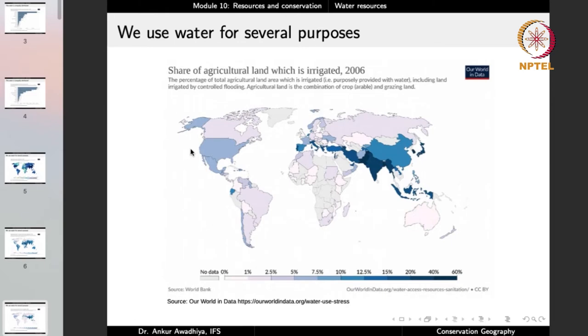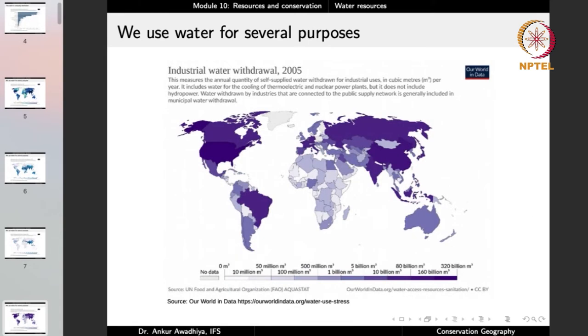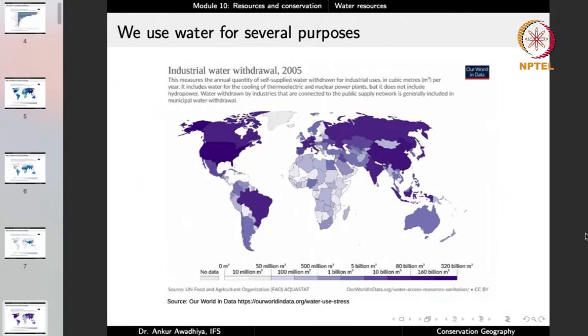If you look at the share of agricultural land that is irrigated — that is, purposely provided with water — we observe that in many countries more than 40% of agricultural land is irrigated. Looking at industrial water withdrawal, in countries like the United States, China, Russia, India, and Brazil a very large quantity of water is being used for industries.